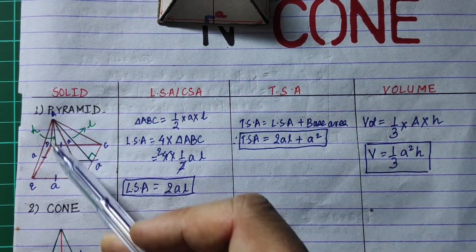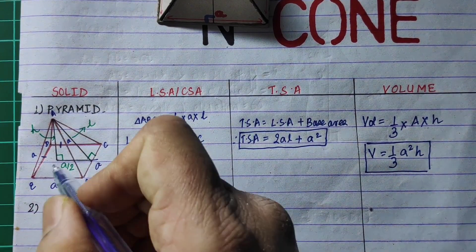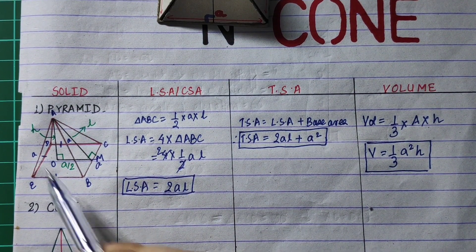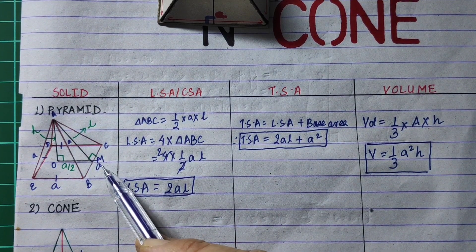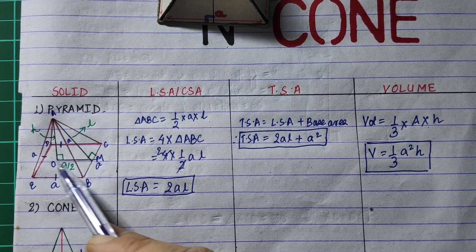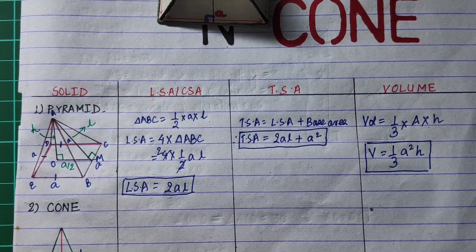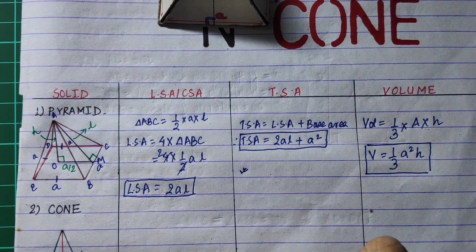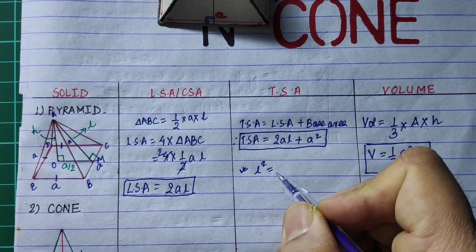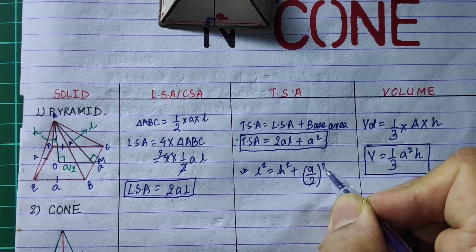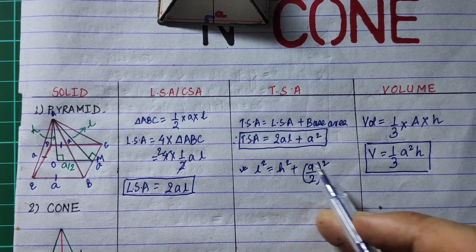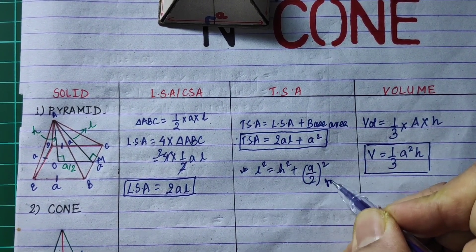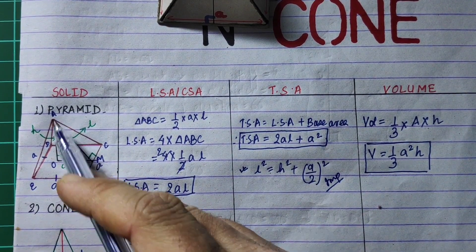Now if you look at the right angle triangle in the pyramid, the slant height relationship gives us: L squared equals H squared plus A by 2 whole squared. This is an important formula relating the slant height L, the vertical height H, and the base side A.